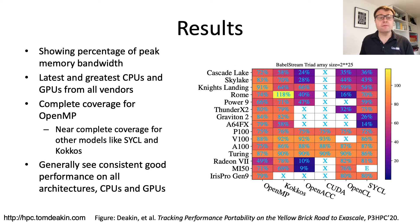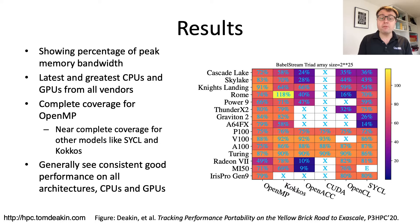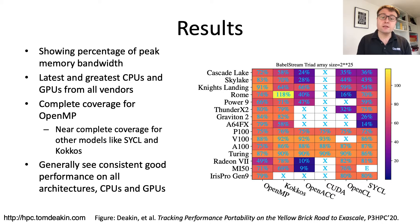For performance, I'm showing a heat map of the percentage of theoretical peak memory bandwidth achieved. BabelStream outputs sustained memory bandwidth, which we compare against the vendor's peak bandwidth figure. On the y-axis are 15 different processors: CPUs from Intel, AMD, IBM, and ARM-based processors such as the Marvell ThunderX2, Amazon Graviton 2, and Fujitsu A64FX. The HPC GPUs include NVIDIA's P100, V100, and A100 Ampere, along with a consumer Turing GPU.